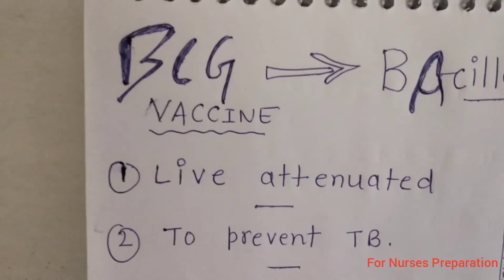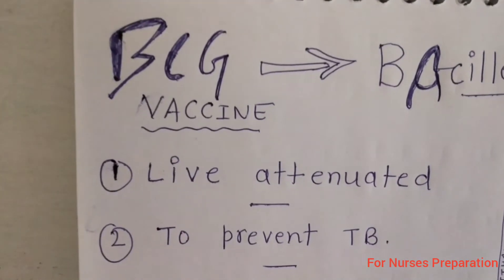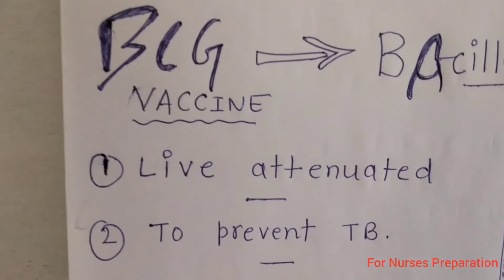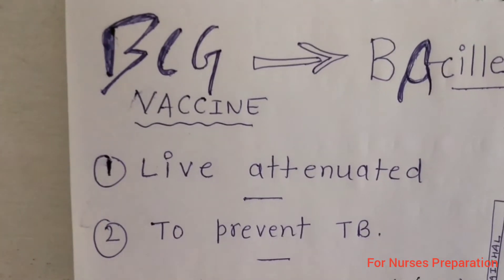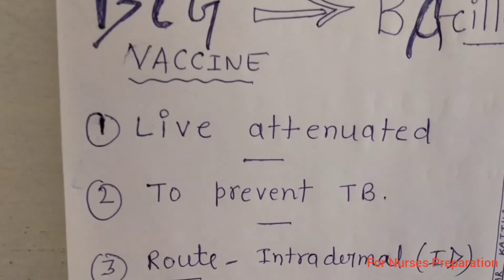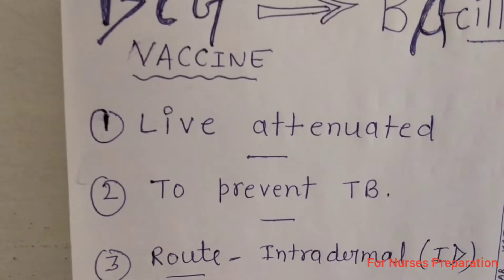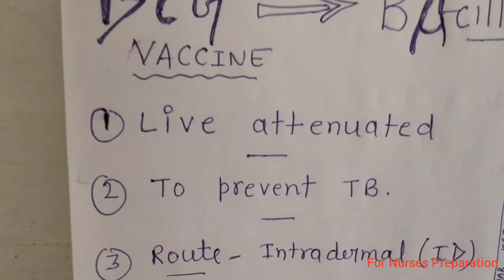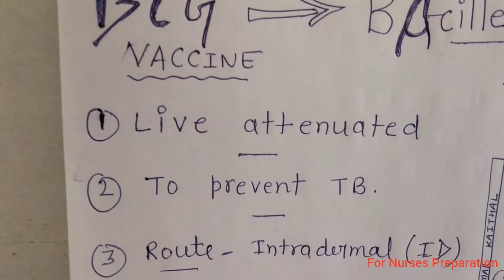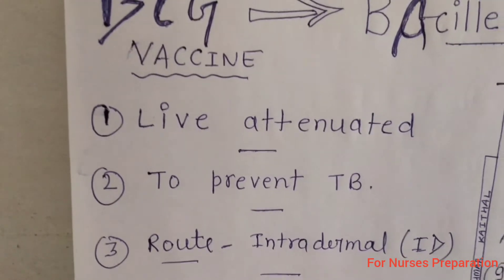BCG vaccine is a live attenuated type of vaccine. Point number 2: BCG is used in the prevention of tuberculosis or TB disease.